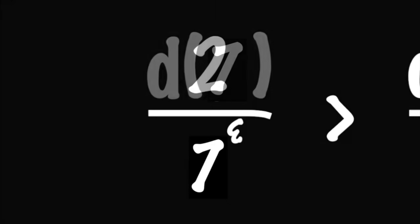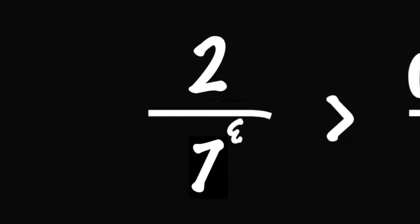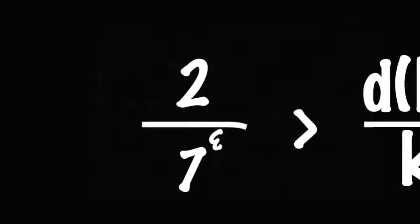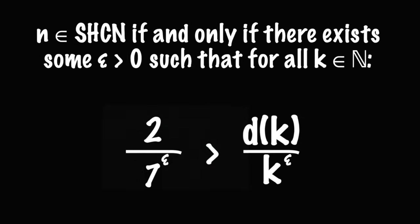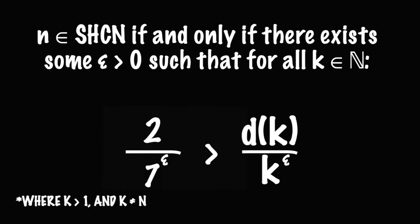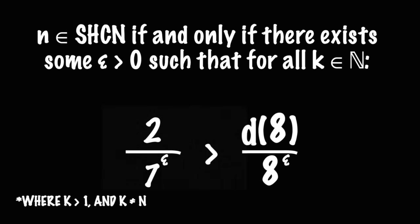Let's take the number 7 for example. As a prime number, d(7) is 2 since it only has two factors, 1 and 7. So if 7 was an SHCN, then much like we did for 2, we should be able to find some epsilon greater than 0 that makes this inequality true, no matter what k is.